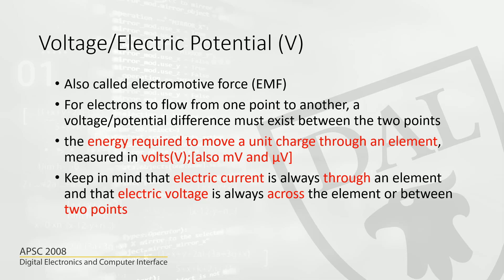The most important thing to remember here is that electric current always flows through an element or through a wire, but voltage is always measured across an element or between two points. The voltage with a battery is measured between the positive and the negative terminal, but when we talk about current, we talk about current flowing through something — through a wire or through an element.